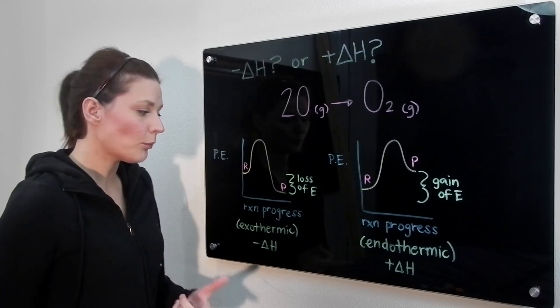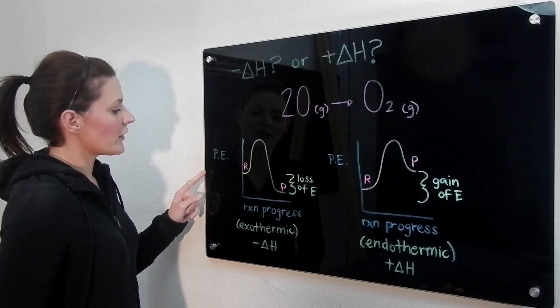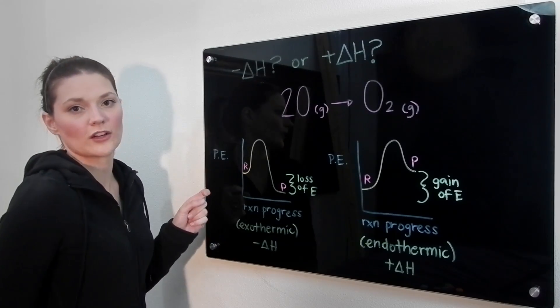In order to understand how that might be helpful, let's take a look at these diagrams. So in this diagram here, this x-axis is the potential energy and this is the reaction progress.